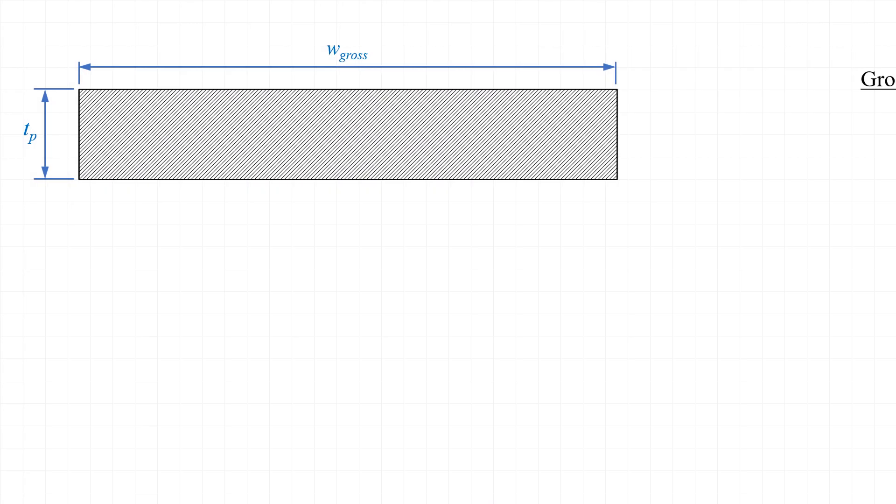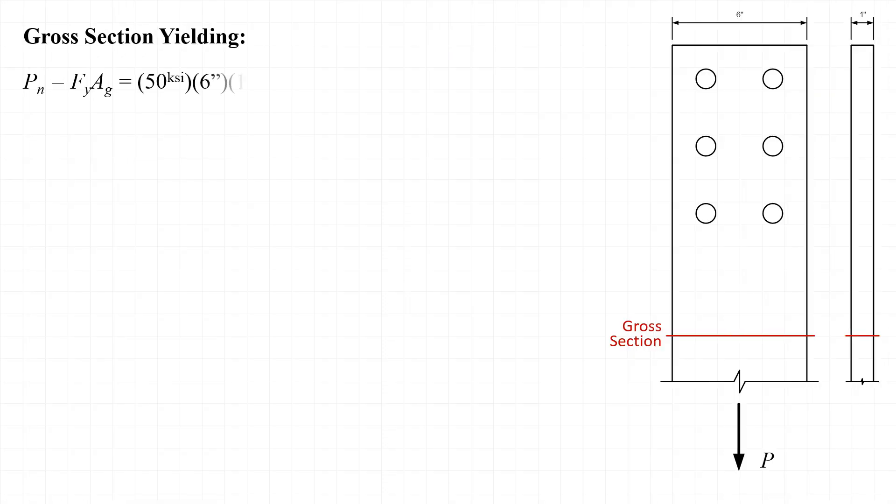Taking a look at this cross section, the gross section, we can see that the gross area A sub g is equal to the gross width times the thickness of the plate. Substituting into our equation for the nominal strength, we see that P sub n is equal to 50 ksi times six inches in width times one inch in thickness, which gives us a nominal strength of 300 kips. When we apply the resistance factor 0.9 for gross section yielding, we see that the design strength phi times P sub n is equal to 270 kips.